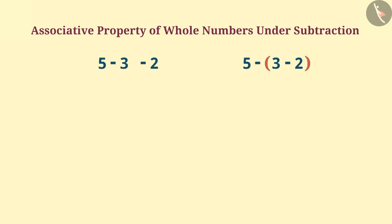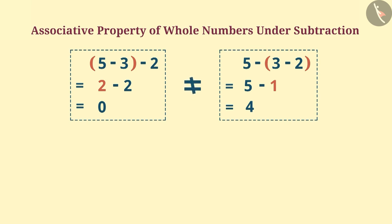If we group the numbers in this way, then first, we will subtract 3 from 5 and then we will subtract 2 from the result. Therefore, the answer will be 0. However, if we group the numbers in this way, then the answer will be 4. The results in both cases are different.